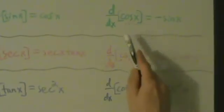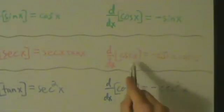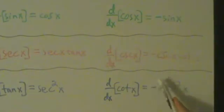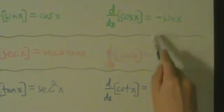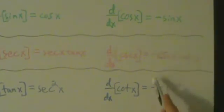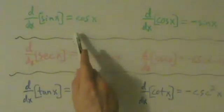And also notice that the derivatives of all the cofunctions, cosine, cosecant, cotangent, they've all got the minus signs. They've all got the negative signs on them. And the other ones, the sine, secant, tangent, they don't have the minus signs on them. But the cofunctions do.